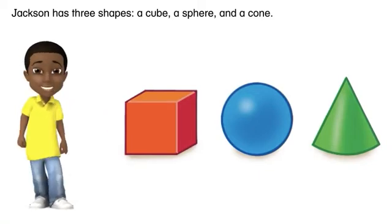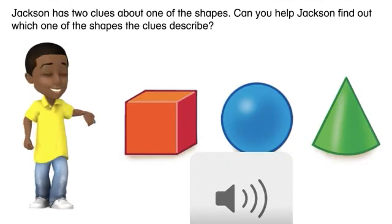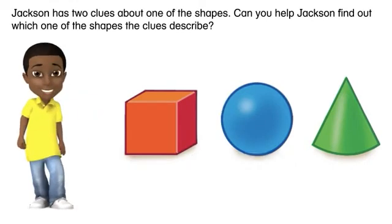Jackson has three shapes: a cube, a sphere, and a cone. Jackson has two clues about one of the shapes. Can you help Jackson find out which one of the shapes the clues describe?